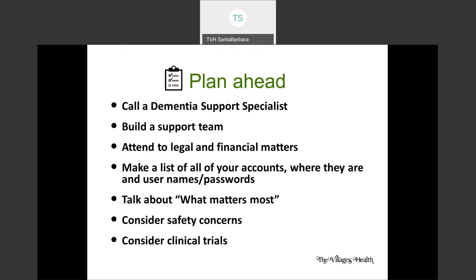Attending to legal and financial matters — including family members in those conversations — could be helpful. Make sure that you continue to treat the person as a person instead of as the disease. Oftentimes when we become anxious or fearful, we start treating the person as a result of symptoms rather than as our loved one. Don't forget to talk to them about what matters most to them — it may be different than what's important to us.